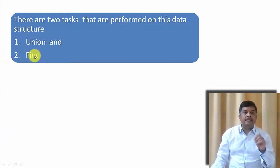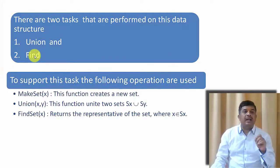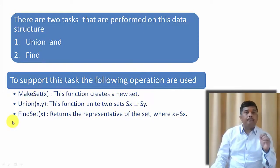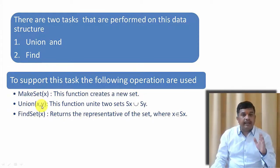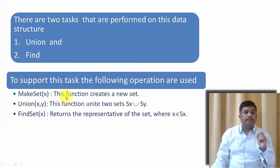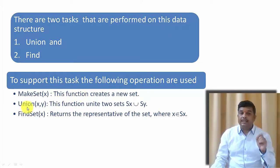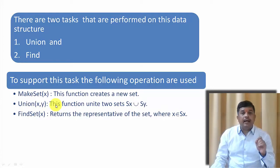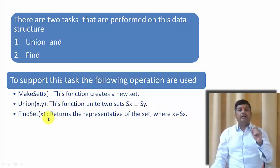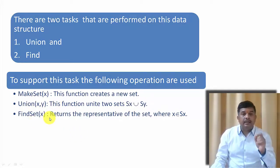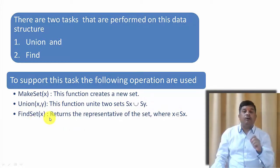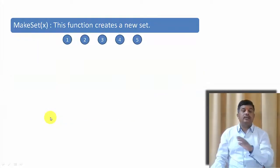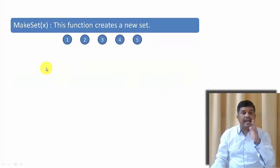Without any operations there is no data structure. So here we are having two different operations: union and find. To implement these, we have three operations defined. Make set of x — it will create a new set. Union of x and y — where x and y are the representatives of two sets, and we perform the union operation. Find set of x — it will return the representative of that particular set. Let us see this with the help of an example.